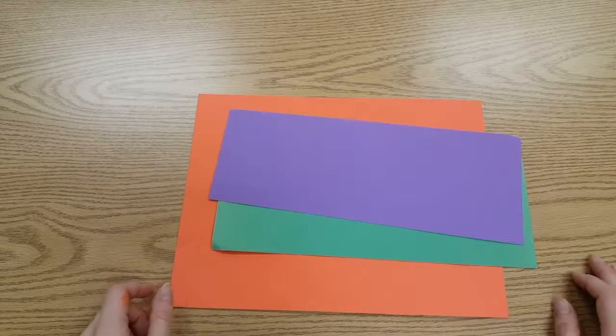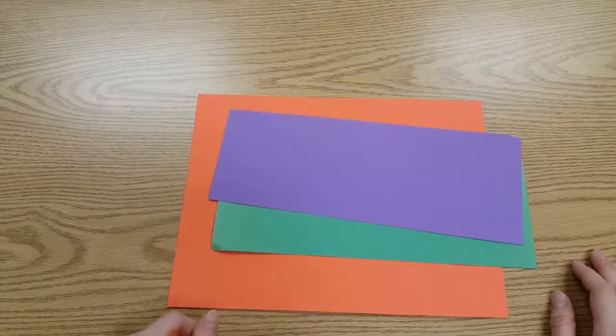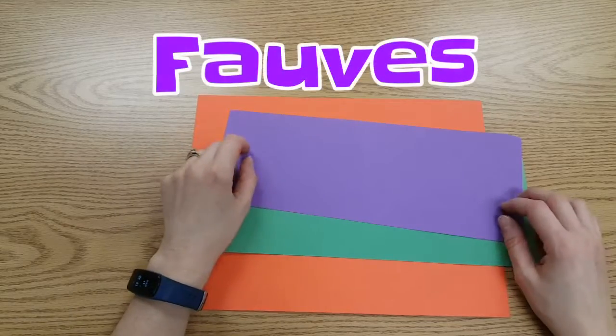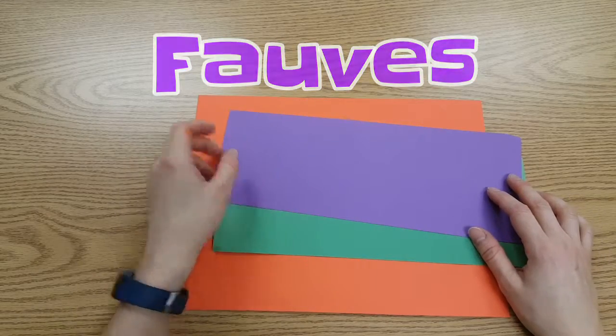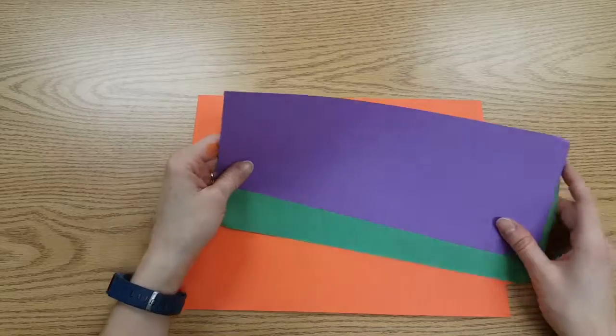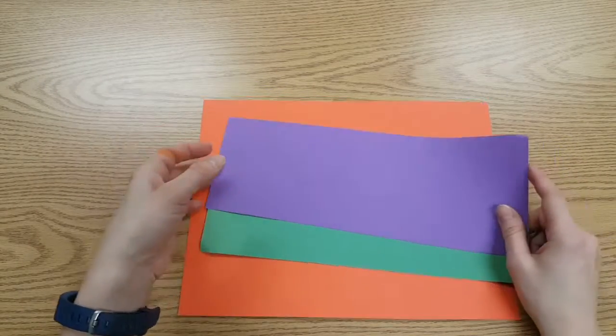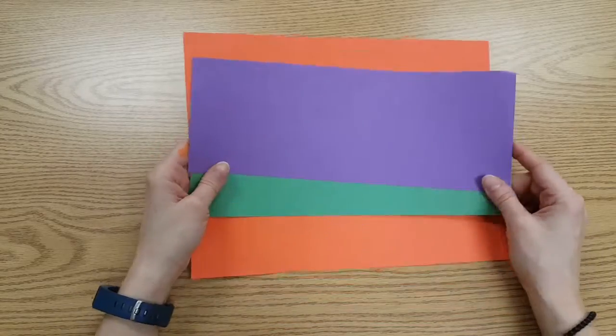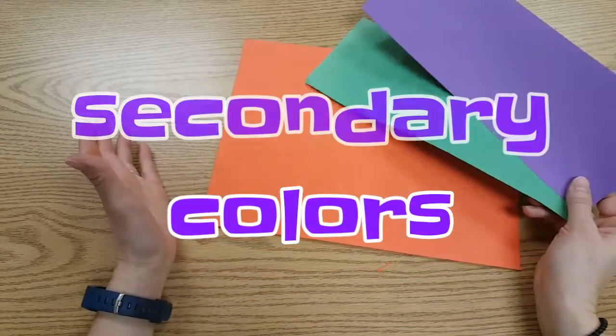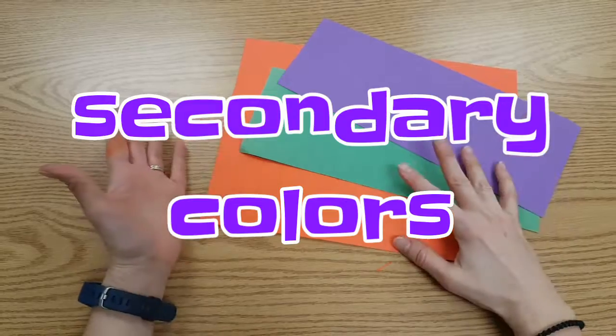Today we're going to make some landscapes in the style of the Fauvists or the Wild Beasts. They were a group of artists that didn't paint with normal colors, so their pictures looked really wild. That's why they were called the Wild Beasts. We're going to make ours with the secondary colors. So landscape and secondary colors.